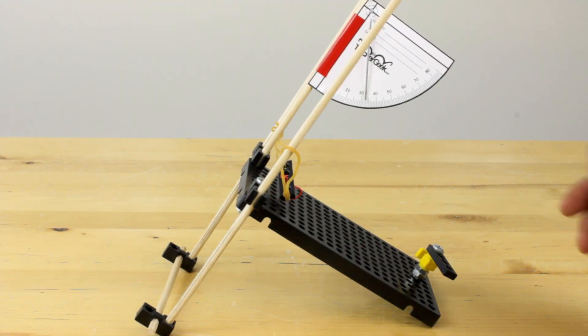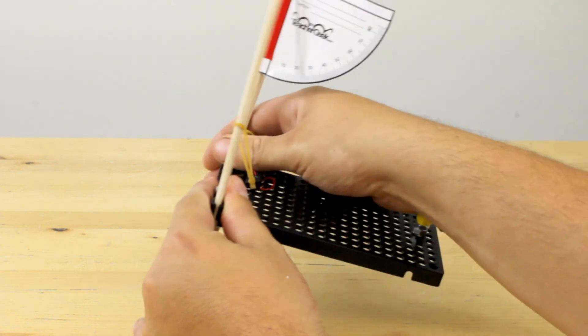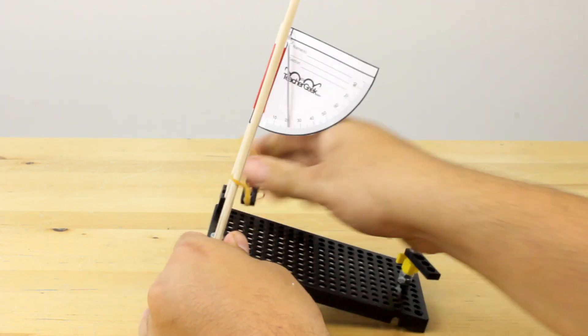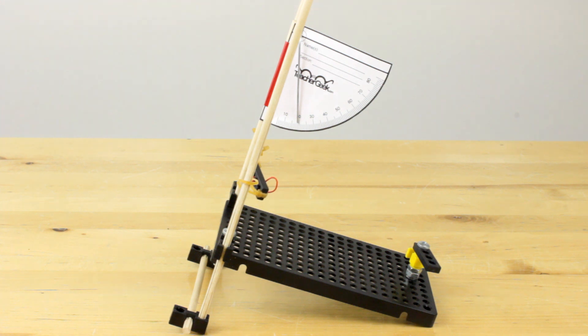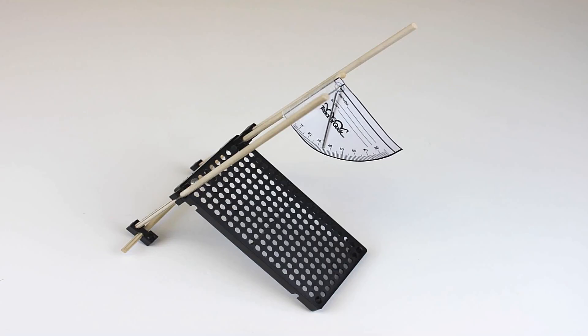When you slide the perpendicular blocks up and down on the dowels, the metal wire will move, and the angle finder will now read the angle that you're shooting at. You've completed the base, now let's build the launcher assembly.